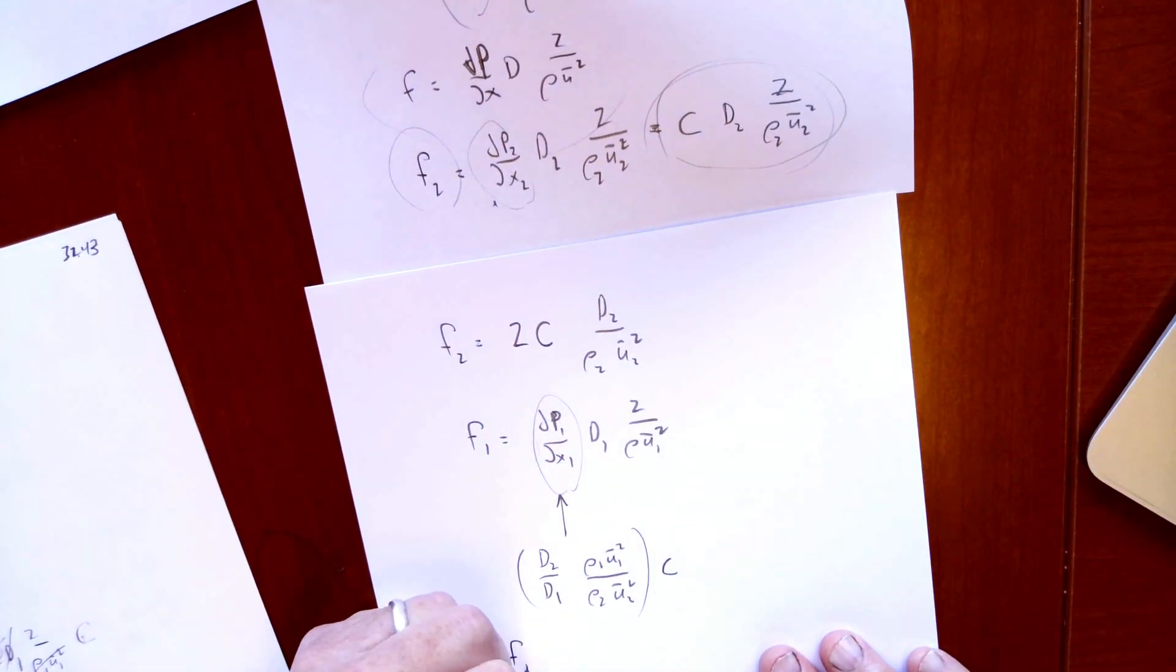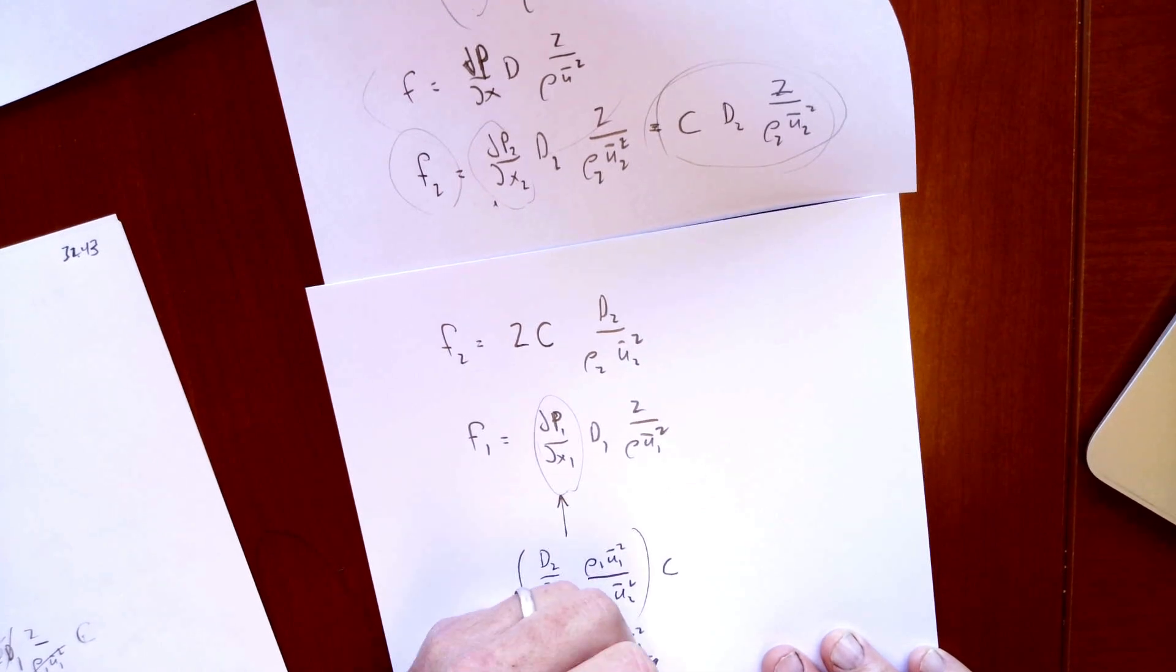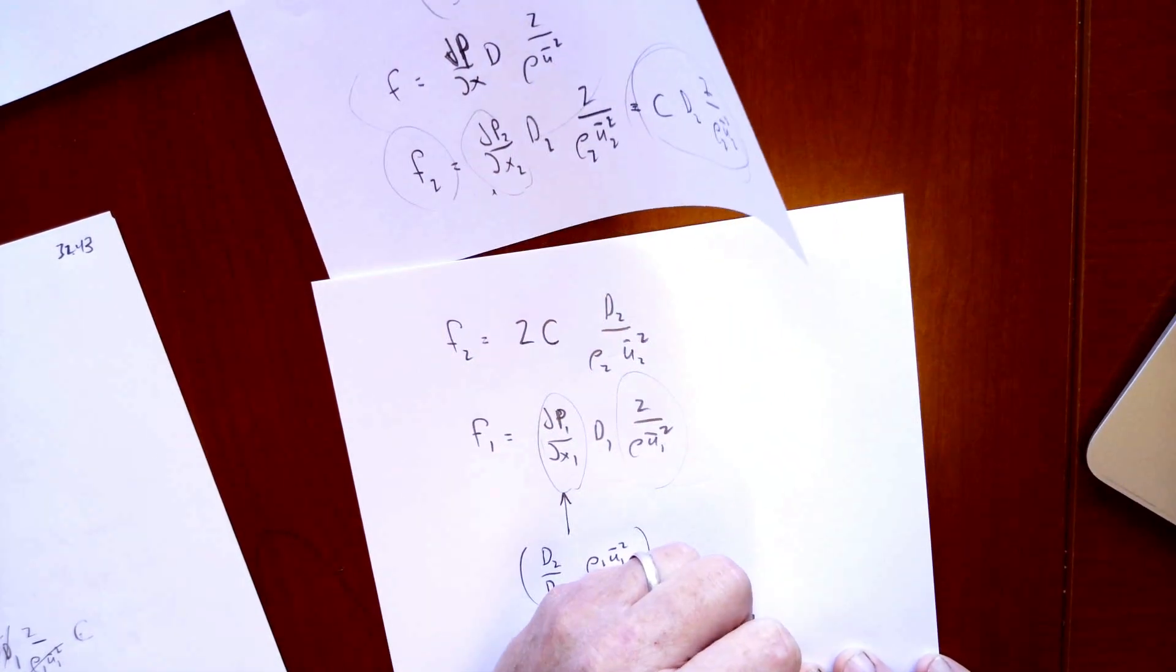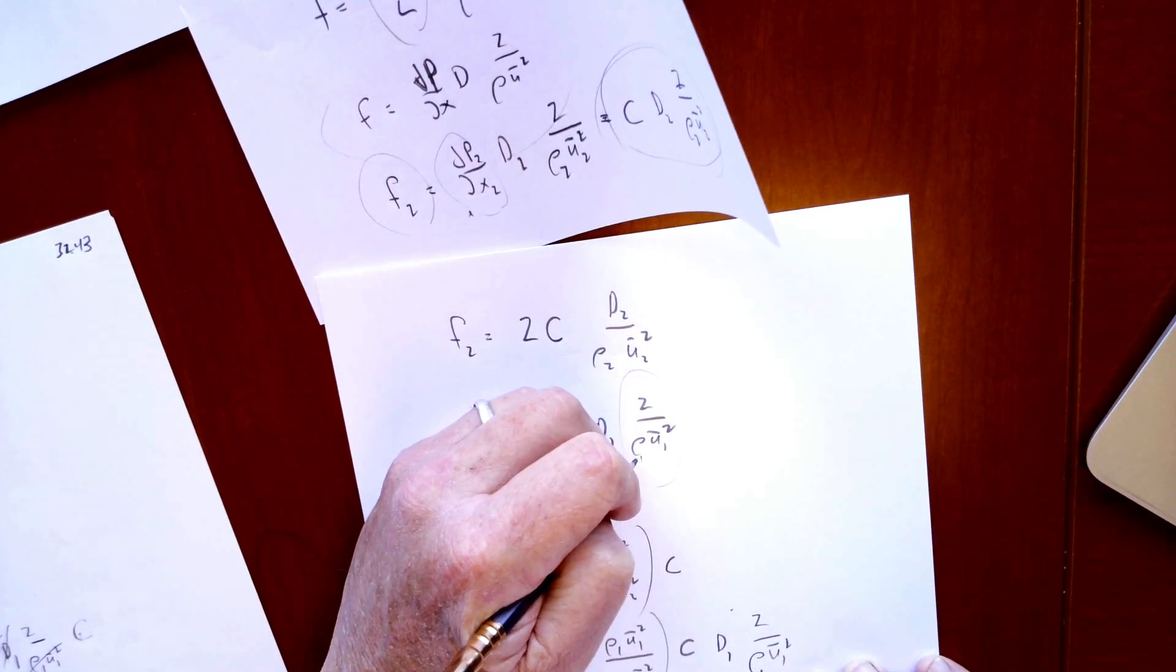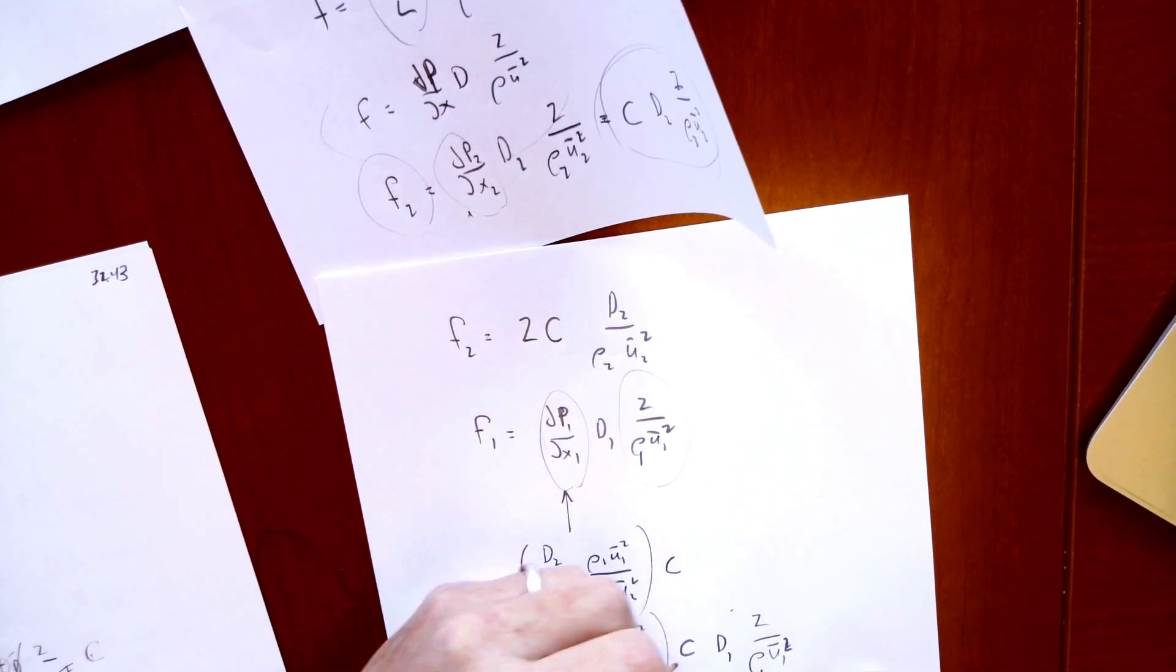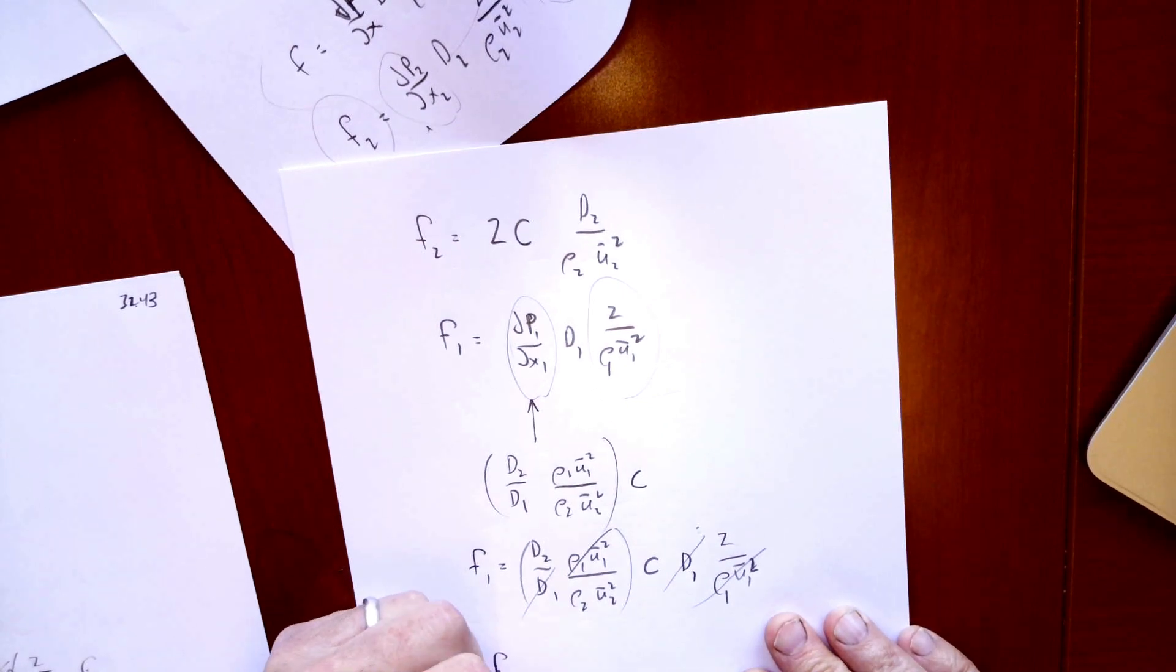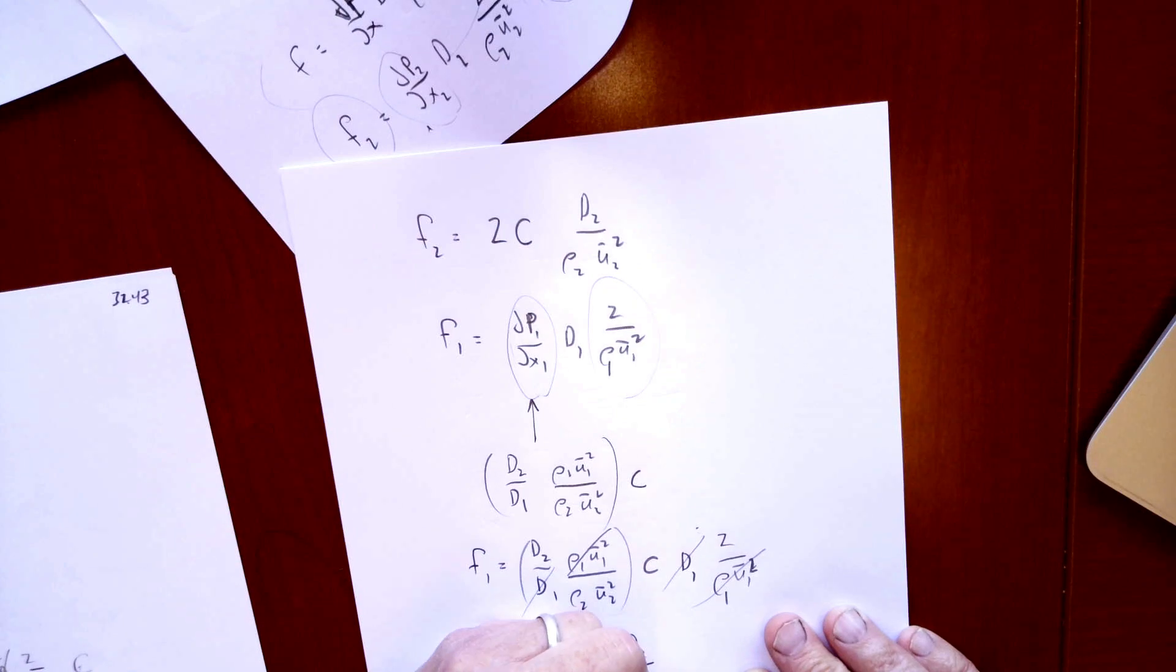So f1 is equal to D2 over D1, ρ1U1 squared over ρ2U2 squared, all times C, all times D1 times 2 over ρ1U1 squared. So what cancels? This D1 cancels, this ρ1U1 squared cancels, and what am I left with? I'm left with f1 is equal to 2 times C times D2 over ρ2U2 squared.